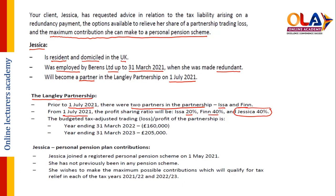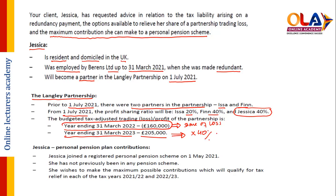For a new partner, the commencement rule of business basis period is applicable. The budgeted tax-adjusted trading profit for the first year after she joined the partnership shows a loss, so she will get a share of the loss — meaning no trading income in tax year 2022/23. In the year ended 2023 there is a profit, so she will get a share of profit: £205,000 × 40% = £82,000 as her share.